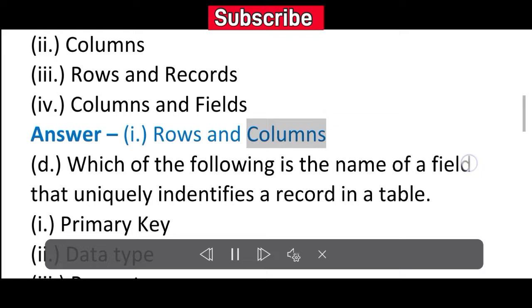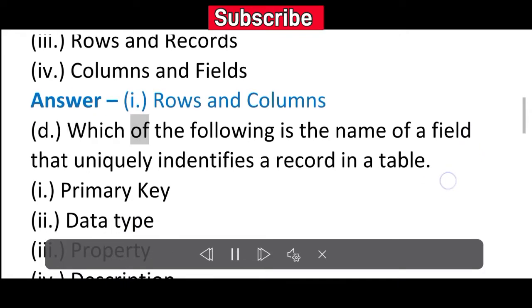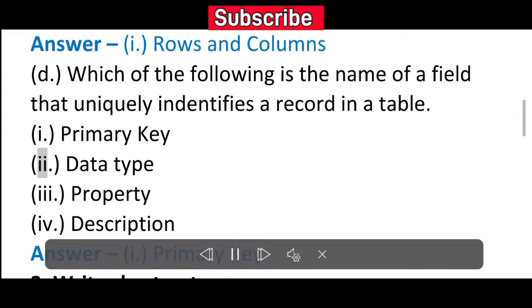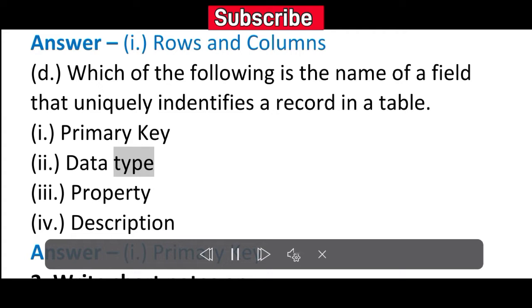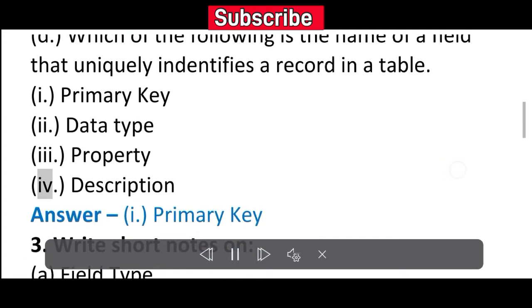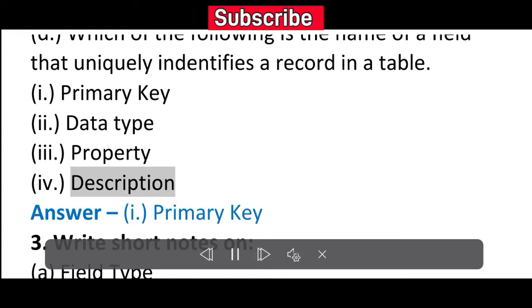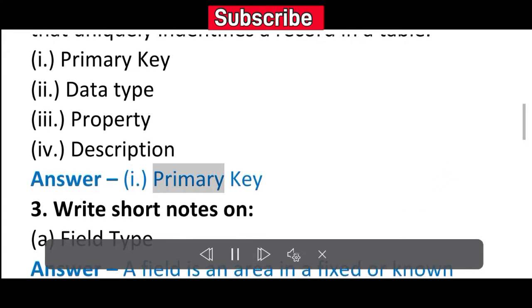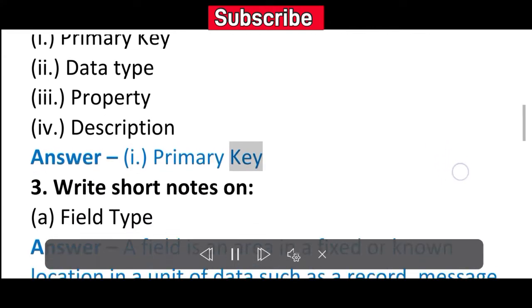D. Which of the following is the name of a field that uniquely identifies a record in a table? (i) Primary Key (ii) Data Type (iii) Property (iv) Description. Answer: (i) Primary Key.